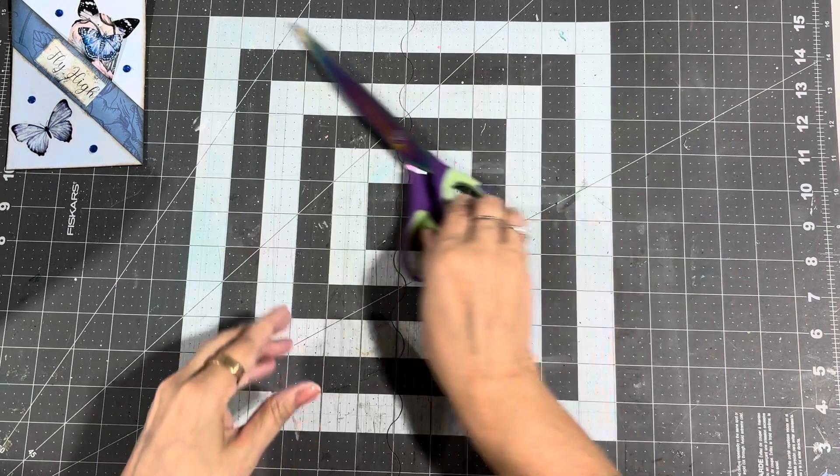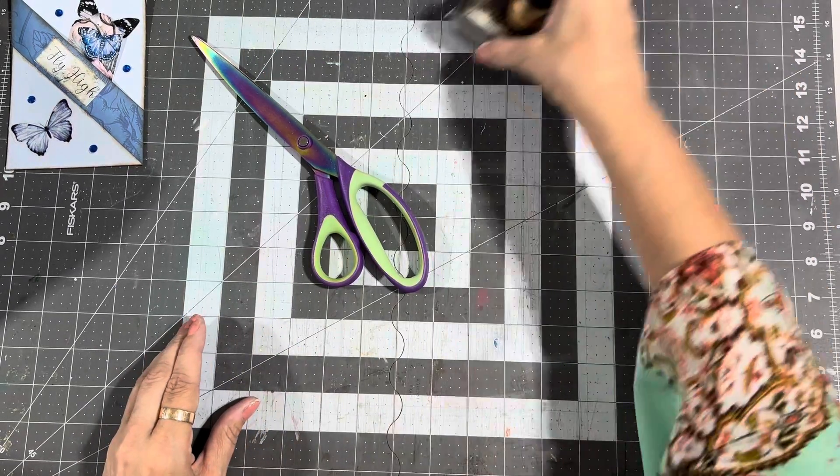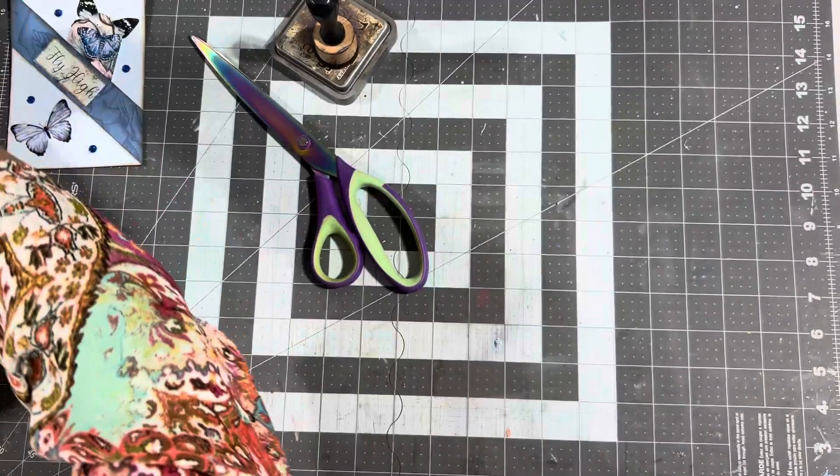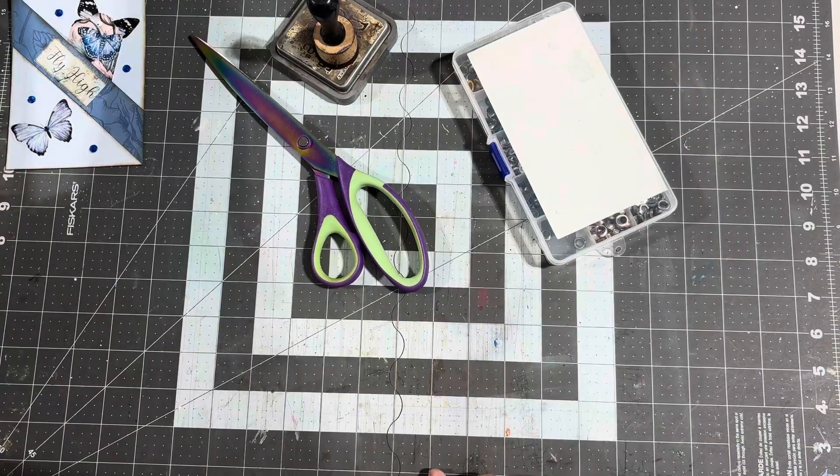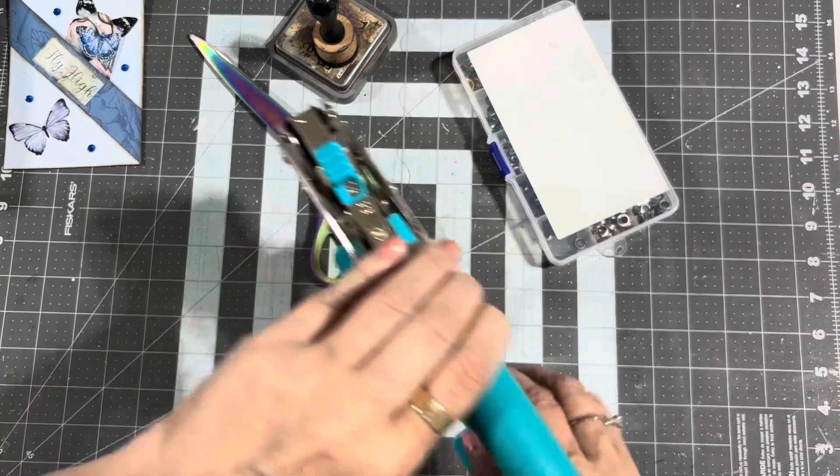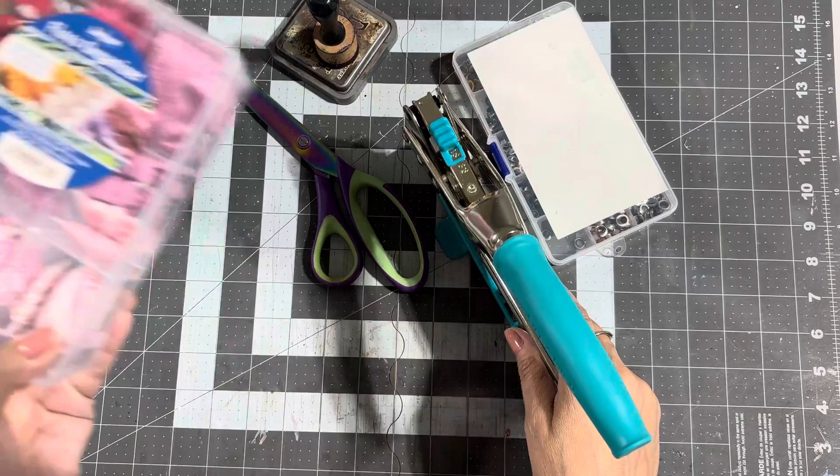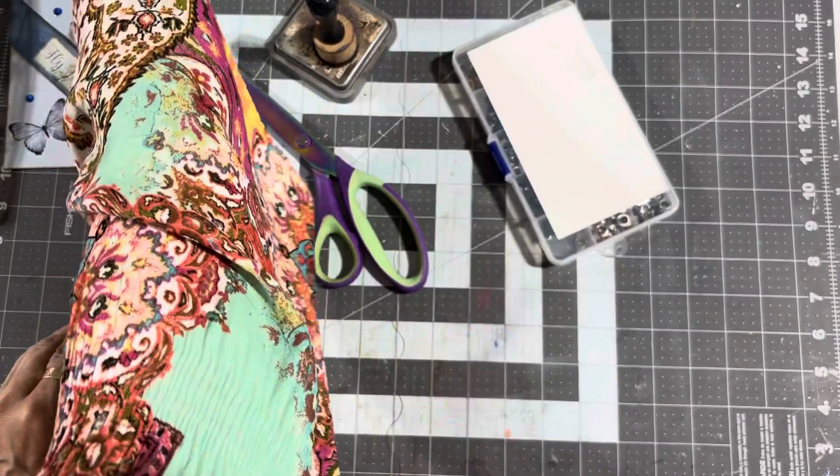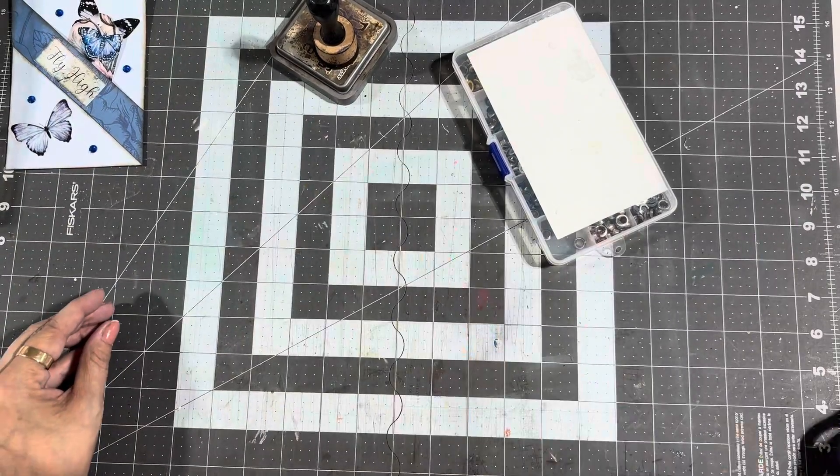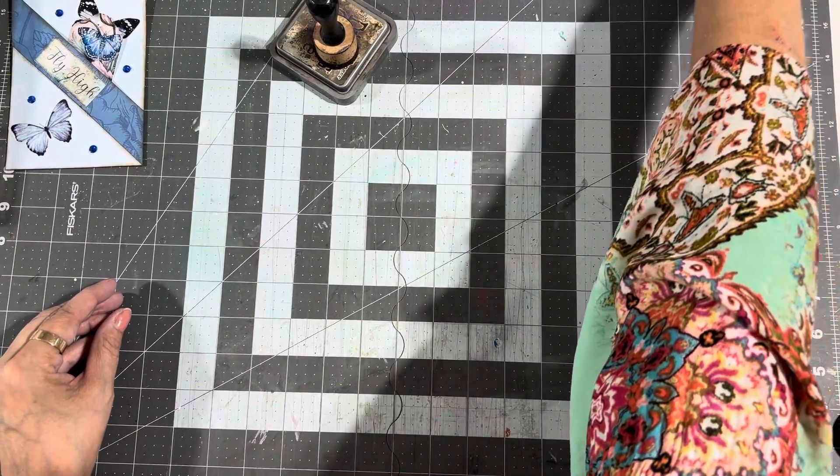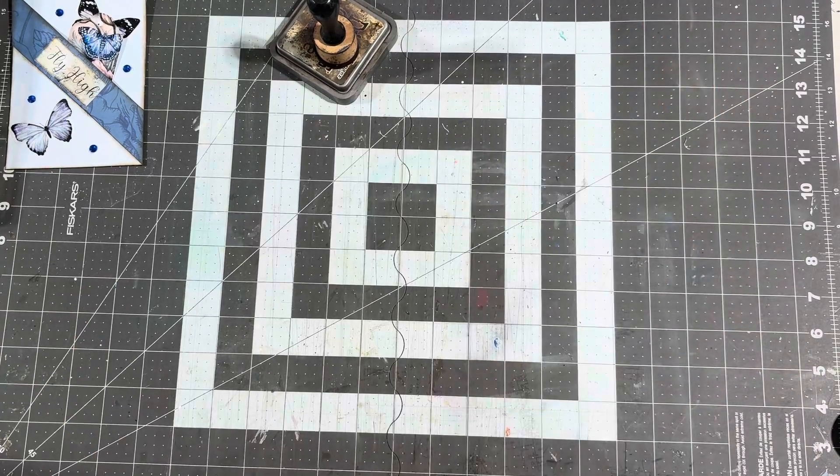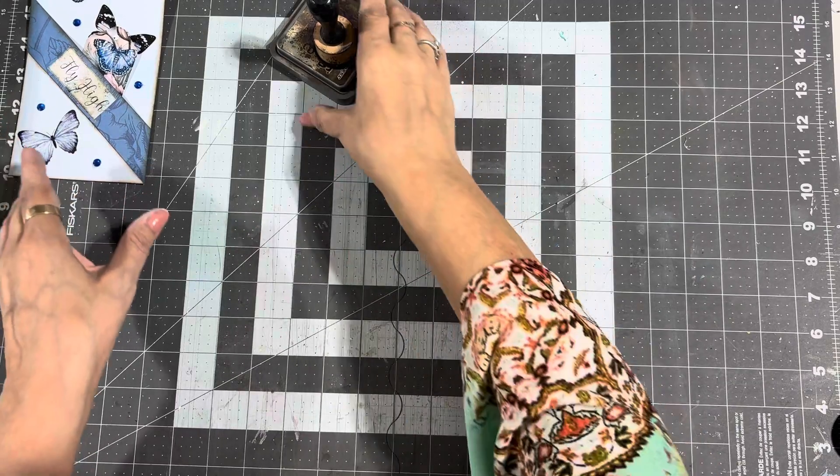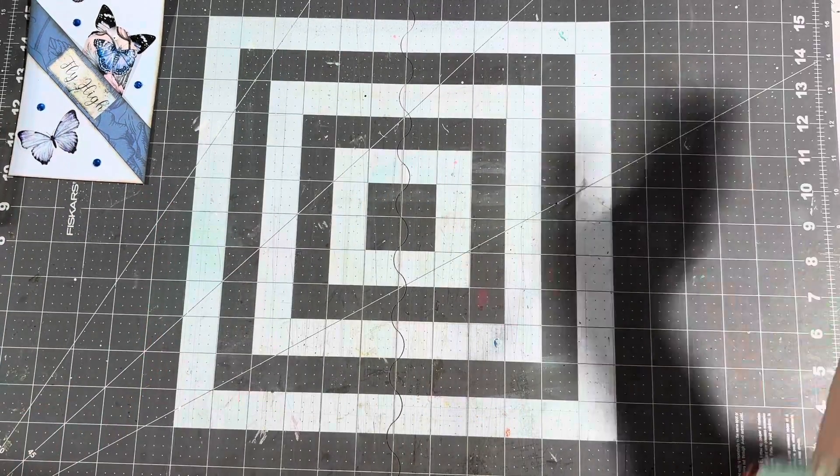And then you need some scissors, some ink if you're going to ink your edges. Eyelets if you want to put an eyelet in the top of your tag and something to set it with and a topper for your tag if you choose to do that. That's up to you. And I believe that's all you need for this project. Super simple, really cute though. I like it a lot. I was just playing around one day and came up with it and thought, well, I'll share it with everybody.